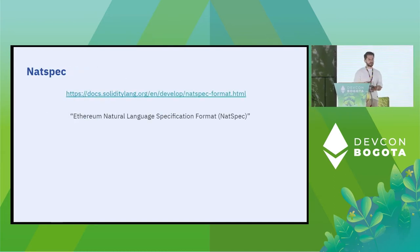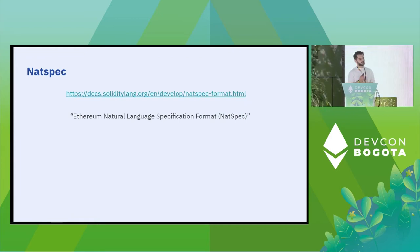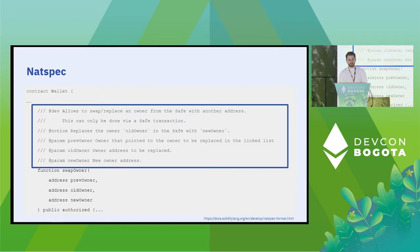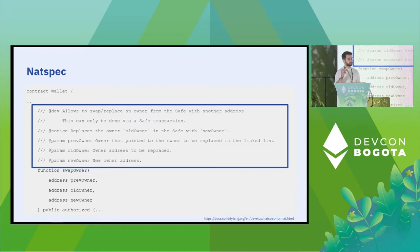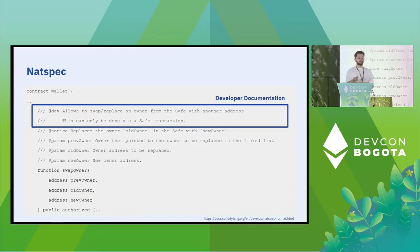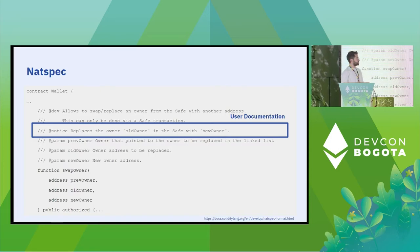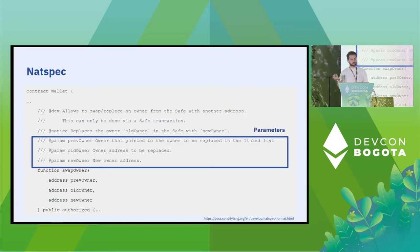NatSpec documentation is what is called the Ethereum Natural Language Specification Format. It's actually part of the Solidity spec. You put the comment and documentation above the function. You have the developer documentation, the user documentation with the @notice field, and documentation for the parameters.